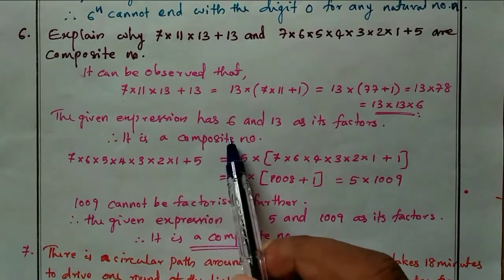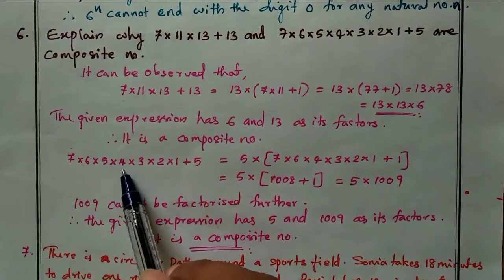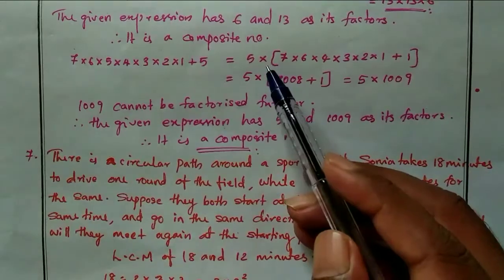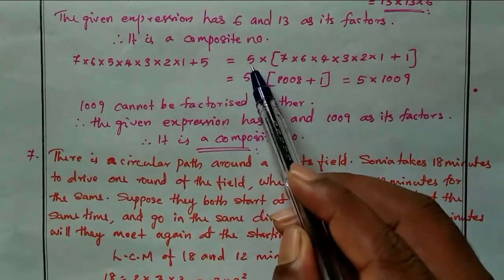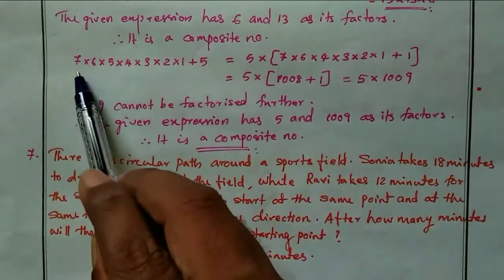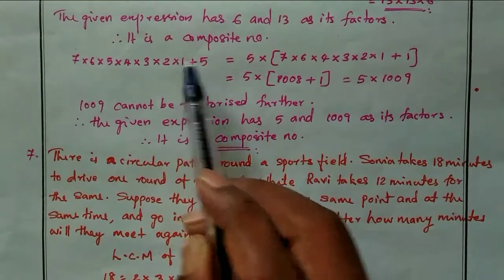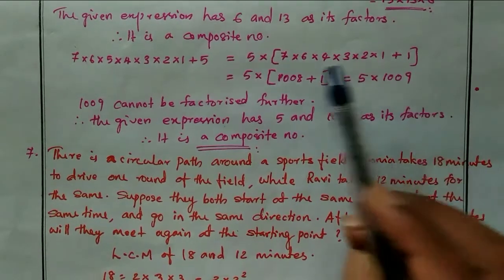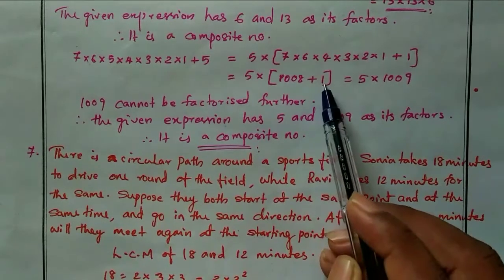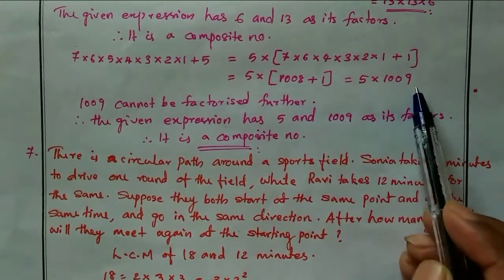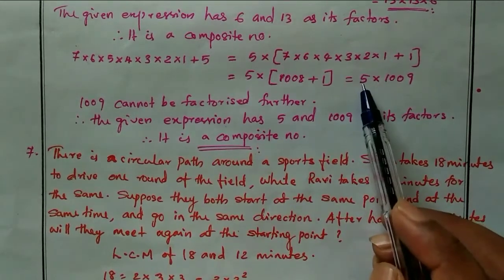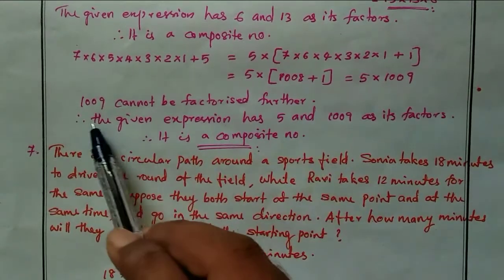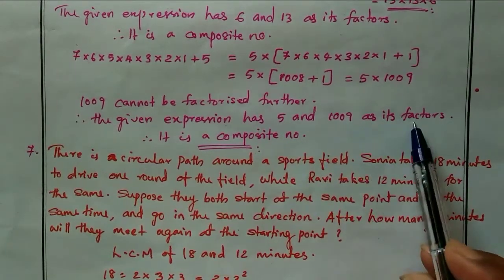For the second expression, 7×6×5×4×3×2×1 + 5, the common number is 5. Taking 5 outside: 5 × (7×6×4×3×2×1 + 1) = 5 × (1008 + 1) = 5 × 1009. There are only 2 factors: 5 and 1009. Since 1009 cannot be factorized further, the given expression has 5 and 1009 as its factors.